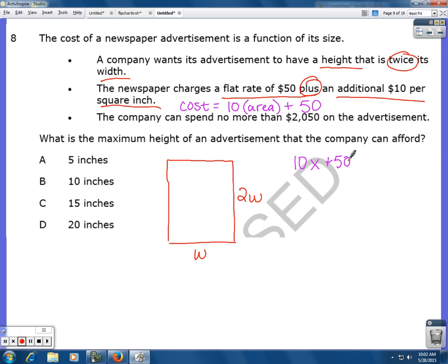They have to spend less than or equal to $2,050. So now I'm going to solve for X to find out what the area, the biggest area that they could have.